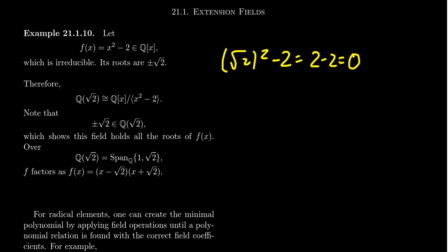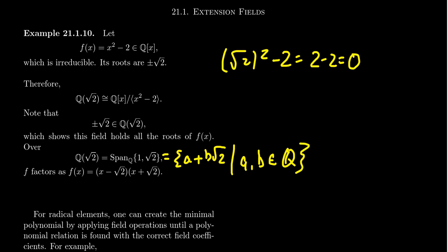Because of previous work, it's important to note that Q(√2) as a rational vector space is two-dimensional with basis {1, √2}. That is, every element of this field can be written as a + b√2 where a and b are arbitrary rational numbers. The polynomial f(x) factors into two linear factors, (x - √2)(x + √2), when viewed as a polynomial over Q(√2)[x]. So by extending the field of coefficients, our polynomial f factors completely.